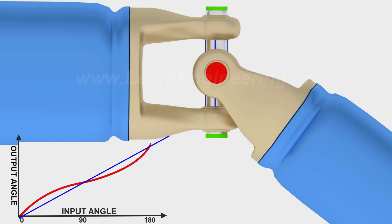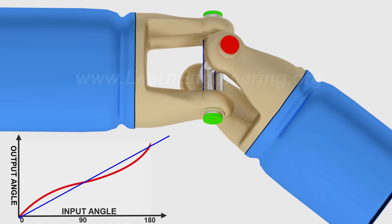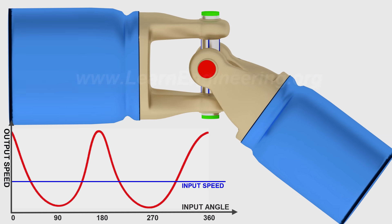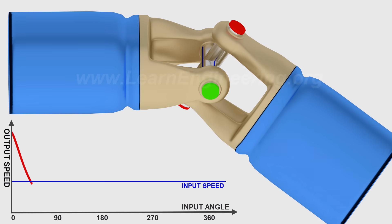Just by taking a simple time differential of this displacement graph, we can find out speed of the output shaft. It is clear that the output shaft has a fluctuating speed, as shown.